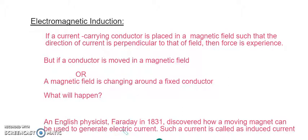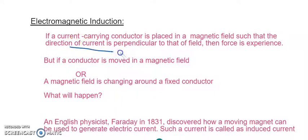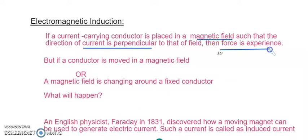Hello everyone. In the previous video, we learnt about Fleming's left hand rule and we also saw how a conducting metallic rod is placed under the magnetic effect with electric current passing through it. The rod shows movement because of the magnetic field and the electric current — it experiences a force. The current carrying conductor, when placed in a magnetic field such that the direction of the current is perpendicular to the field, experiences a force.